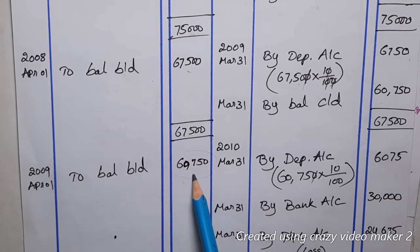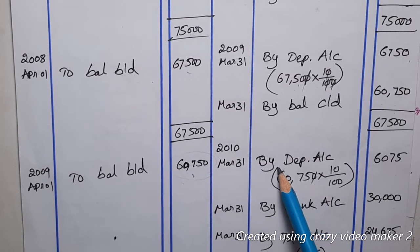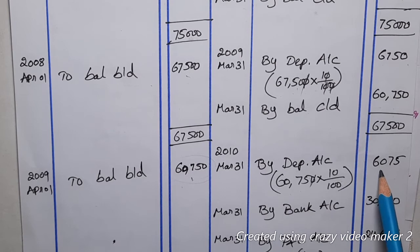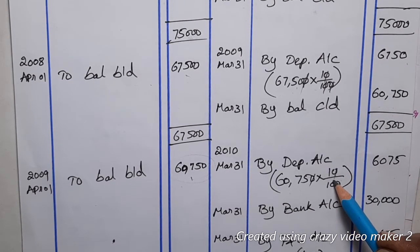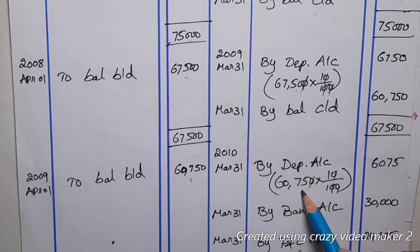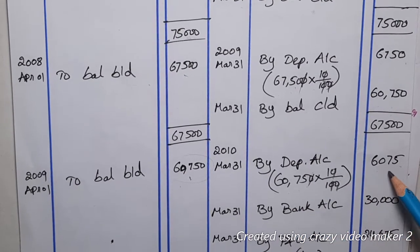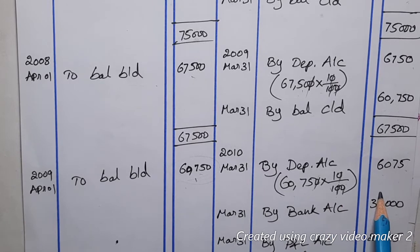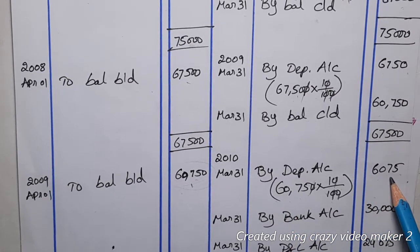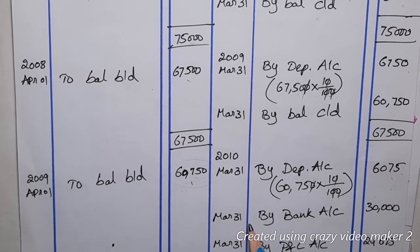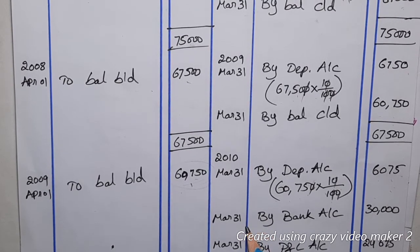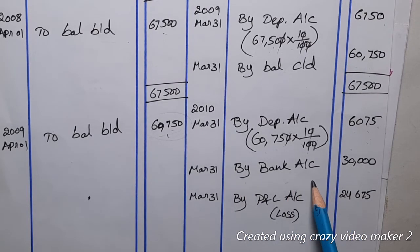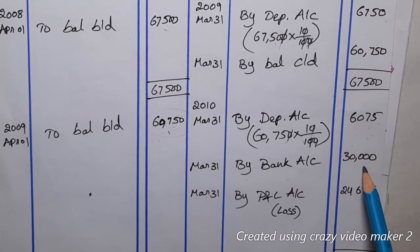In Year 3, the brought-down balance is ₹60,750. On March 31st 2010, we calculate 10% depreciation on ₹60,750 = ₹6,075. On the same date, the machine is sold: debit the bank account with ₹30,000 as the sale proceeds. The machine account is now closed with entries for depreciation, sale proceeds, and the resulting loss.